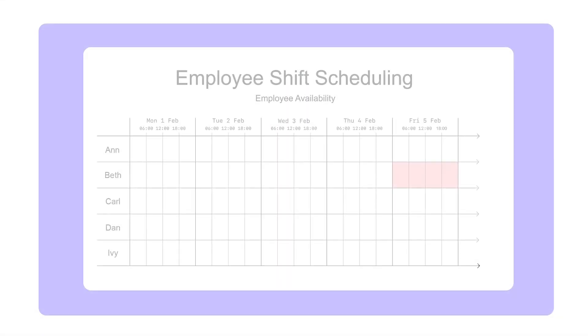Scheduling would be a lot easier if everyone was always available, wouldn't it? That never happens. In reality, employees have certain moments when they are unavailable. This could be due to planned holidays, sickness, or a variety of other reasons. If an employee is unavailable for a certain period, no shifts can be assigned to them during that time.